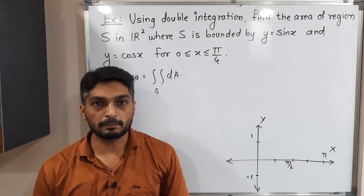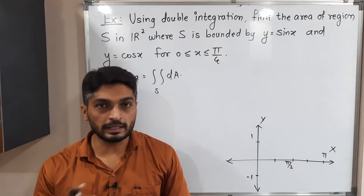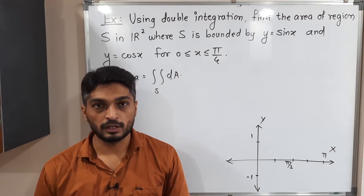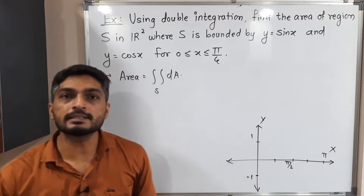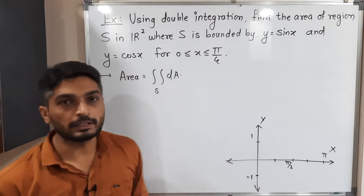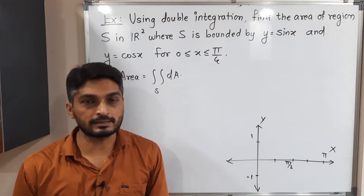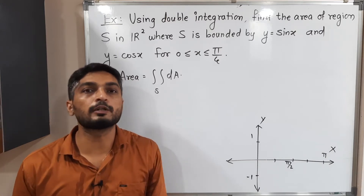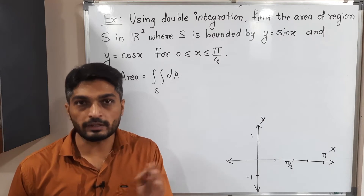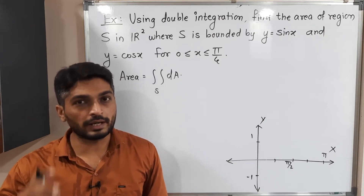Let us discuss this example. We have to find the area of a given region using double integration. We have a simple formula: area is equal to double integration of dA over S. There is no function inside — only dA, meaning dx dy or dy dx.